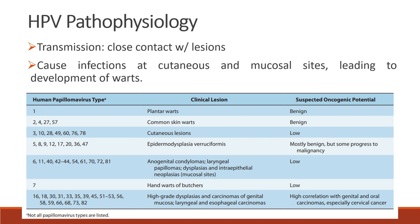For pathophysiology, the human papillomavirus can be transmitted through close contact with lesions, and this will cause infections at cutaneous and mucosal sites, leading to the development of warts. A table shows each HPV type with its clinical lesion and suspected oncogenic potential. Most types are benign, but only types 5, 8, 9, etc. are mostly benign but can progress to malignancy.